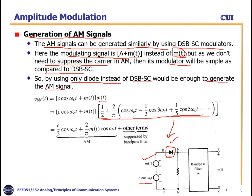We have a message signal. This is our additional carrier signal which we need to transmit, and this is our message signal. Instead of cos, we are transmitting ω(t). After multiplying this and removing the higher order terms, we will get (C/2)cos(ωct) + (2/π)M(t)cos(ωct). This is our AM modulated signal — this part is the additional carrier and this is our modulated signal M(t)cos(ωct). The other terms are suppressed by the band-pass filter tuned at ωc, and we get the output V₀(t), which is our AM signal.